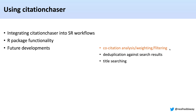Some of the future developments we want include building on the analysis tab to allow co-citation analysis, weighting of results, or filtering based on how frequently articles occur in your full network. We'd like to build in deduplication against search results so you can remove articles already found. There is some overlap with existing projects like ASySD, a deduplication R package. We'd also like to allow titles to be searched for — at the moment it only uses full matching of identifiers. Searching on titles is messy and labour intensive so we haven't built that in yet, but we're considering how best to do it.